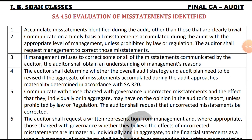Hello friends, this is Hatim Ramparawala and in this video we will revise ISA 450 — Evaluation of Misstatements Identified During the Audit. Let's begin. The general step is that the auditor performs the audit procedure and finds out the misstatements identified during the audit and communicates the same to the management.